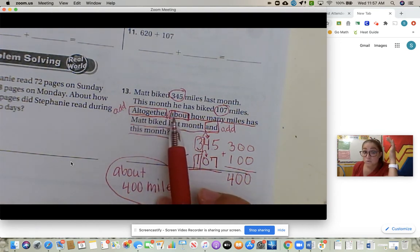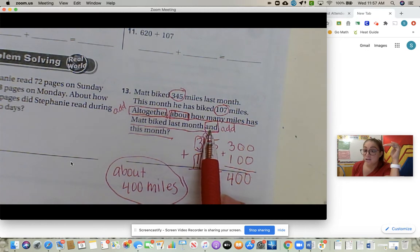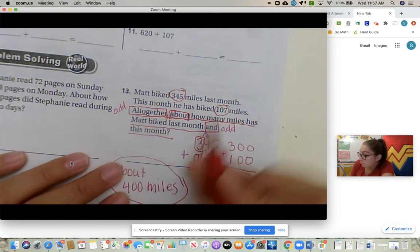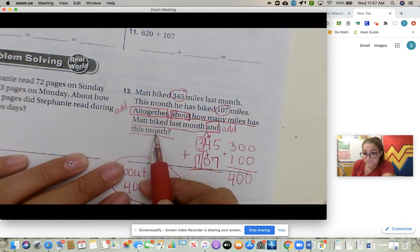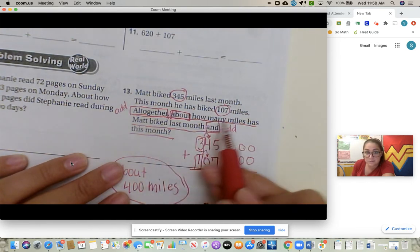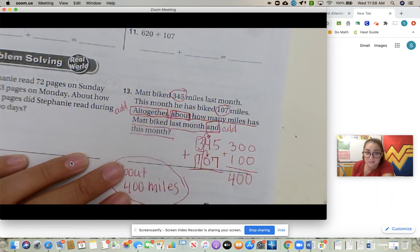And also means add. And in a math problem it will tell you the two. So we are adding last month and this month. If there's other numbers, it doesn't mean we add them all. We look at what is 'and' in between: last month and this month.